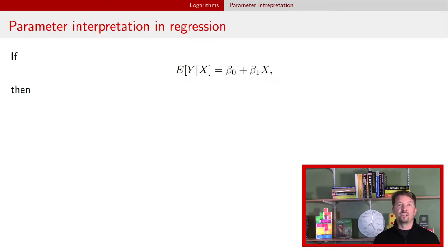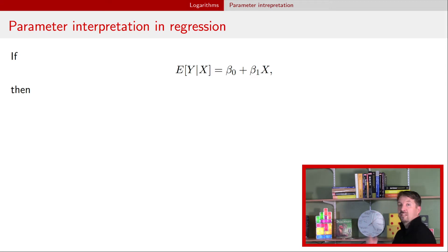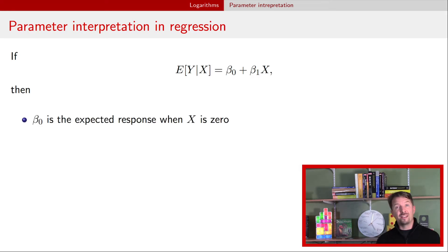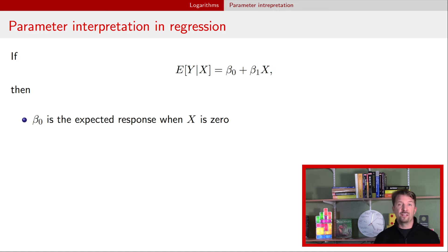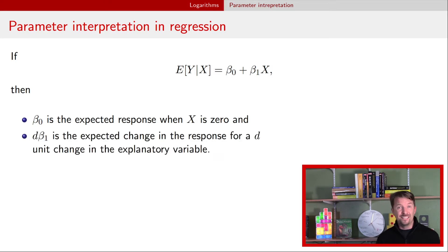I just want to remind you about our simple linear regression model: the expected response y is equal to beta naught plus beta one times the explanatory variable x. Beta naught is the expected response when the explanatory variable is zero. And I want to expand the interpretation of beta one: if x increases by d, then there's a d times beta one expected increase in the response.